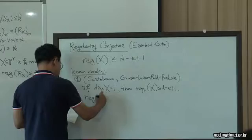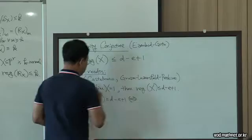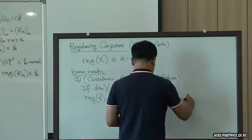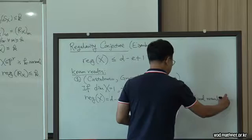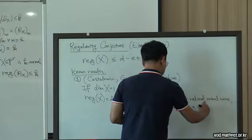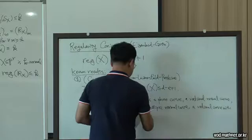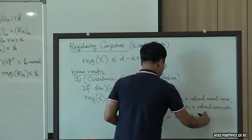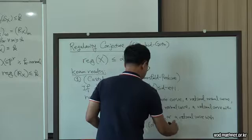In Yusong-Bak's talk, they also classified the extremal case. When regularity of X attains the maximum, then X is a plane curve, or a rational normal curve, or an elliptic normal curve, or a rational curve with an extremal secant line where degree equals co-dimension plus 2.